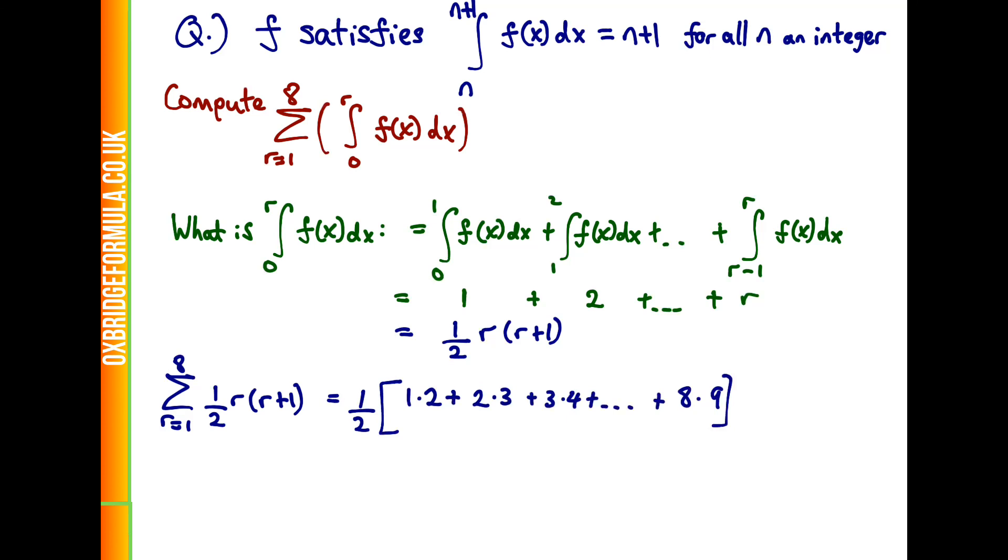So doing that now, we get that this is precisely a half - bringing this half outside - then for r equals 1 we get 1 times 2, r equals 2 gives us 2 times 3, and we continue all the way up till we get 8 times 9.